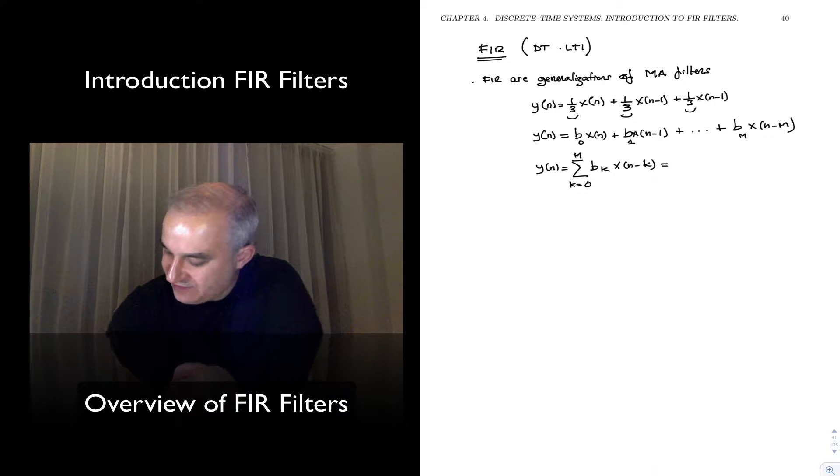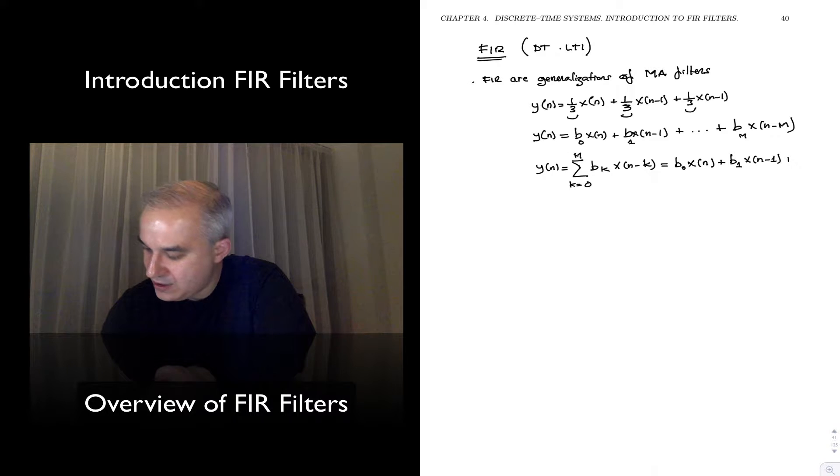and I just noticed that we have the first one will be B of 0, for K equals 0, X(N-K) being 0, plus B of 1, X(N-1), the previous sample, plus B of 2, X(N-2), da da da da, B of N, X(N-N).